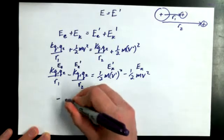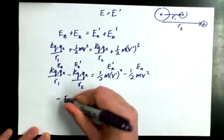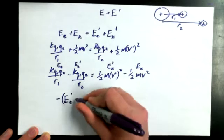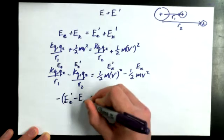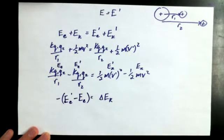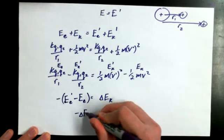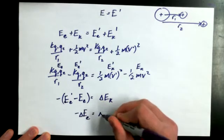That's really the same thing as saying negative of ee primed minus ee is the same as saying just ee minus ee primed. Negative of delta ee. So negative of delta ee is equal to delta ek.